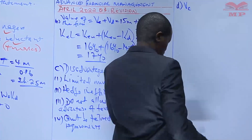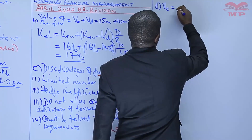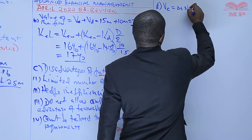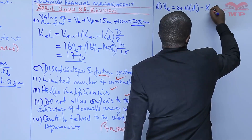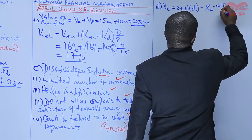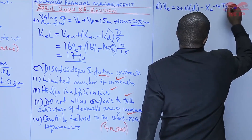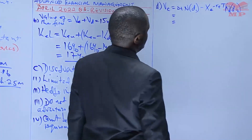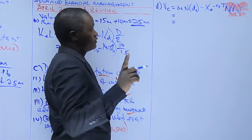The value of a call, the formula is given, is equal to the standard deviation N D1, minus strike price E raised to negative R times T, times N D2. That is the formula for value of a call using Black's call formula.